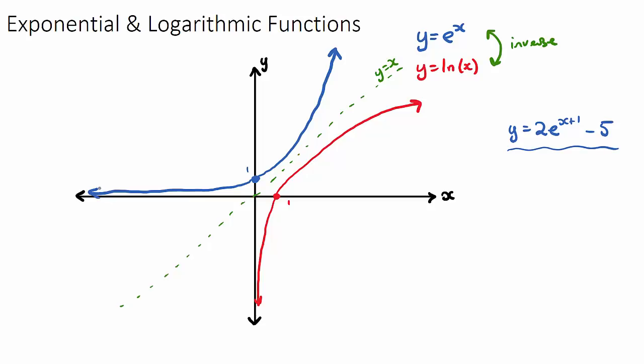So exponential functions will typically look like this unless there's a negative sign in front of the x, and then it's going to be exponential decay. If there's a negative sign in front of the whole function it will be a flipped version of it. But the basic shape we need to know is that it will increase, and a logarithmic function will have a similar shape but the reflection in the y equals x line. Good luck.